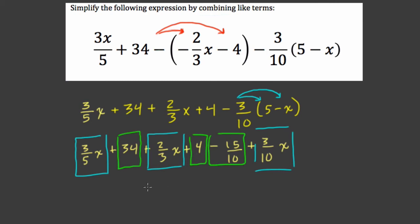Let's add those constant terms first. 34 and 4 is 38 minus 1.5. 15 over 10 is 1.5. So what is 38 minus 1.5? Well, that's just 36.5. So our constant terms equal 36.5.